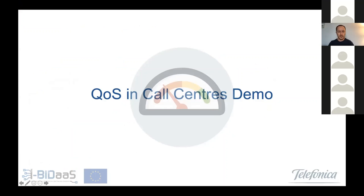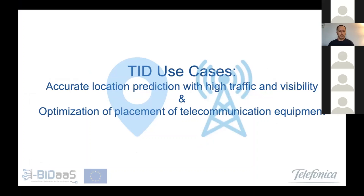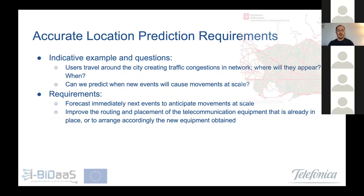Accurate location prediction is about people traveling around the city and creating traffic congestions in the network — we want to know where they will appear next and when, and if we can anticipate events that will cause movements at scale, like a concert that will suddenly bring 50,000 people to a small space like a football stadium causing connectivity issues. Some requirements include understanding how we can forecast immediately the next events, how we can improve the routing and placement of equipment already in place, or order new equipment. The main challenges are: interpolating missing events to recover possible event trajectories, minimizing processing time with respect to growing data size, and maintaining real-time delivery of results.